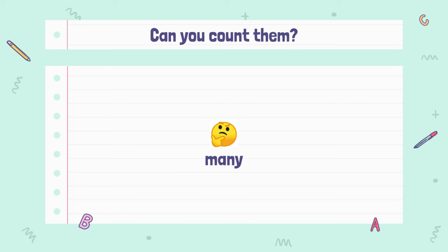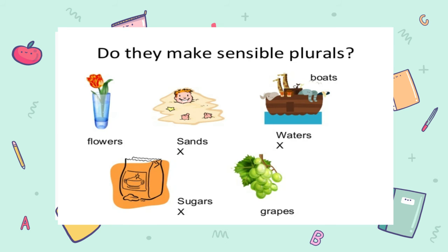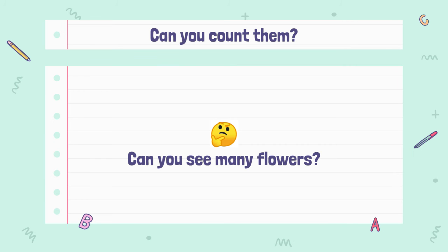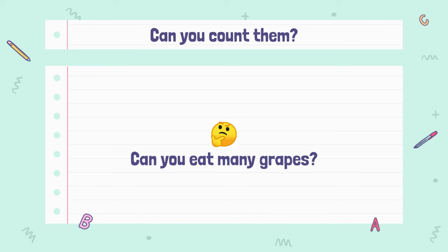For a question when you can count them, you use many. Again, flowers, boats, grapes — these are just examples, you can use other words as well. Can you see many flowers? Can you see many boats? Can you eat many grapes? Not a lot of or lots of.